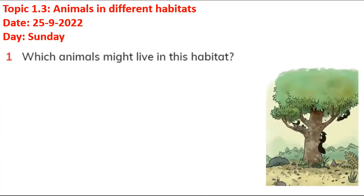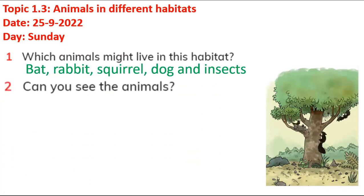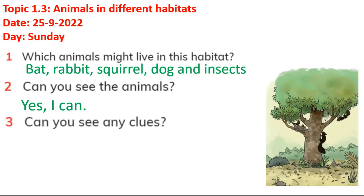In the activity, we answered: which animal might live in this habitat? You have to look at the habitat and choose — it could be cats, dogs, squirrels, bats, rabbits, or insects. Insects are small and live underground or in trees. Can you see the animals? Yes — birds on the tree, a squirrel climbing, a bat sitting, or small insects.